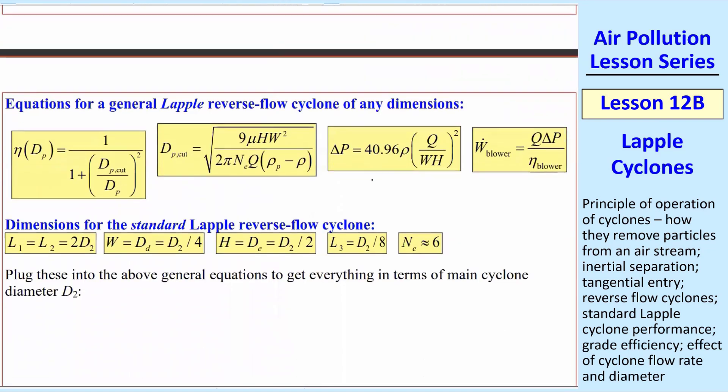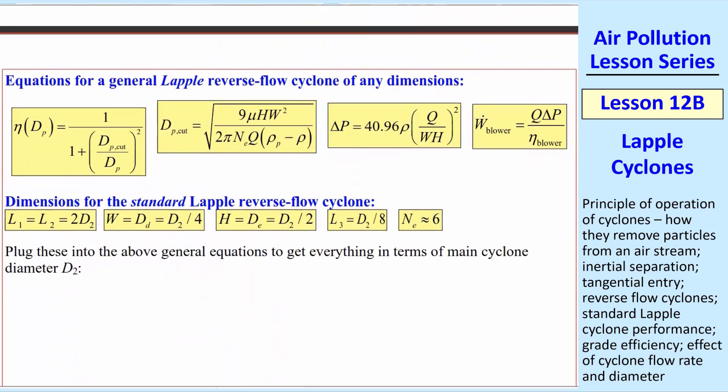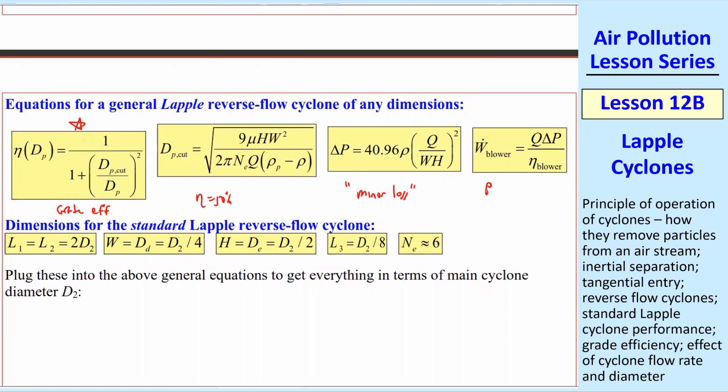Here are some equations for a general reverse flow Lapple. They call it a Lapple. That's the standard one, the most common one. We have an expression for eta, the grade efficiency. We have an expression for the cut diameter. Remember, that's where eta equals 50%. This is grade efficiency. And then there's a pressure loss. This is kind of like a minor loss. If we're doing analysis of an exhaust duct and you happen to have a cyclone in there, you would have to use this delta P as your minor loss. And then the power to drive this thing is given by this last expression.